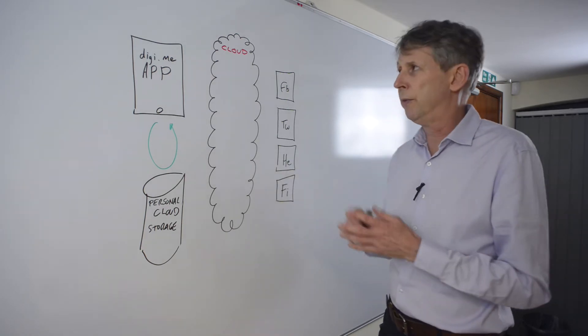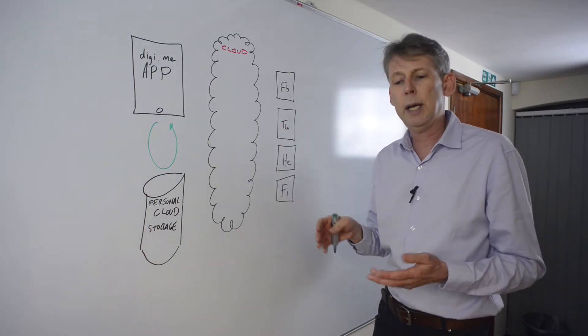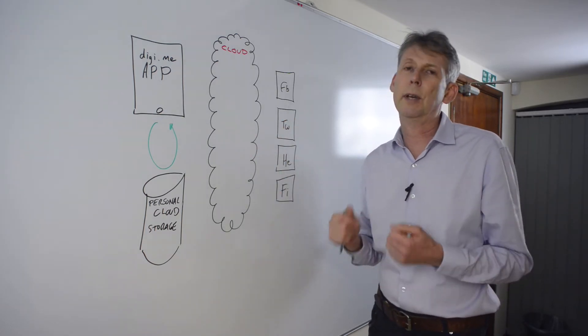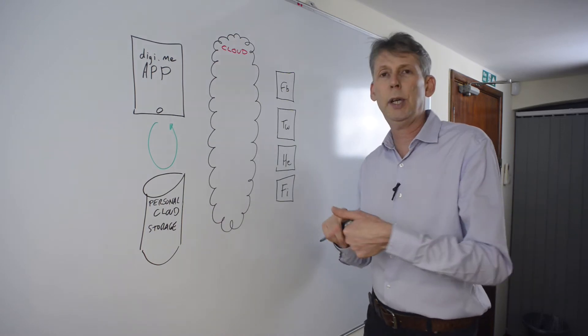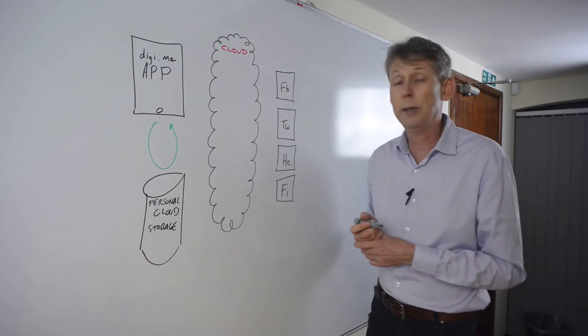And so how do we do that? We fundamentally built a cloud service that made this happen, but it had to be built on the three rules of the company which were that we do not see, hold or touch user data. So we had to do a number of things that were quite different and unusual.